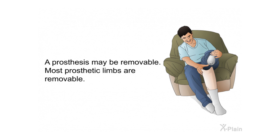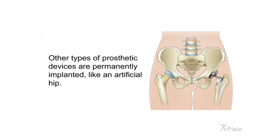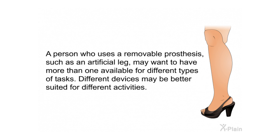Prosthetic devices can help mobility by replacing a hip, a knee, or other joint, the leg, or the foot. A prosthesis may be removable — most prosthetic limbs are removable. Other types of prosthetic devices are permanently implanted, like an artificial hip. A person who uses a removable prosthesis, such as an artificial leg, may want to have more than one available, as different devices may be better suited for different activities.